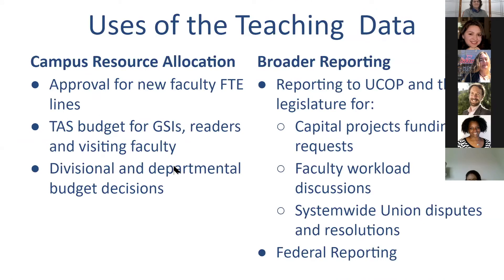We use the teaching data for all sorts of different processes. Campus resource allocation is one — the budget committee looks at this for approval of new faculty FTE lines, that is who gets funded for new permanent instructors. We use it for calculating the task budget for GSIs, readers, and visiting faculty, and for divisional and departmental budget decisions. We also use it for broader reporting: we report to UCOP and the legislature for things like capital projects funding requests, faculty workload discussions, system-wide union disputes, and federal reporting.